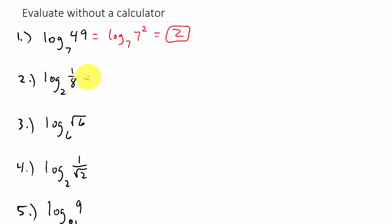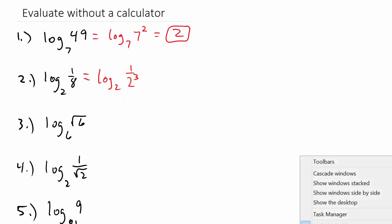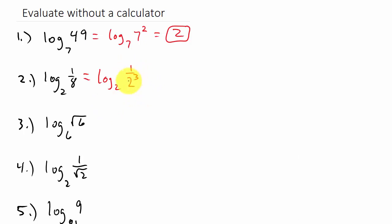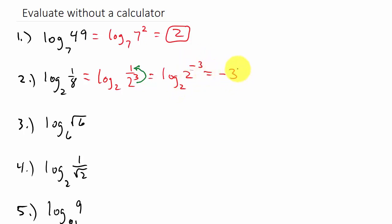Next we have log base 2 of one-eighth. Can we rewrite one-eighth as 2 raised to a power? Well, 8 can be written as 2 to the third, so that's 1 over 2 cubed. Notice the 2 is in the denominator, so we move it up into the numerator — when you move a term across the fraction bar, it changes the sign of the exponent. So that becomes 2 to the negative 3, and since the bases are the same, our answer is negative 3.